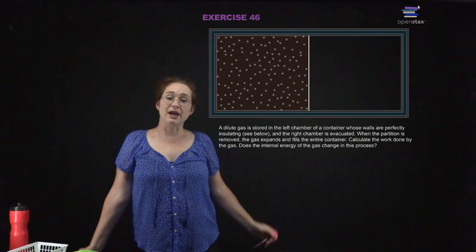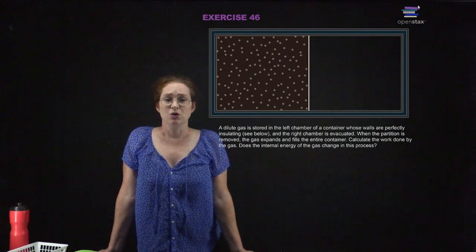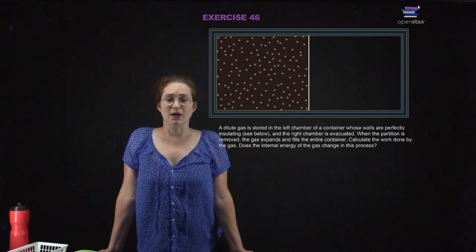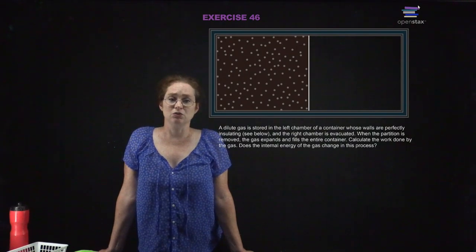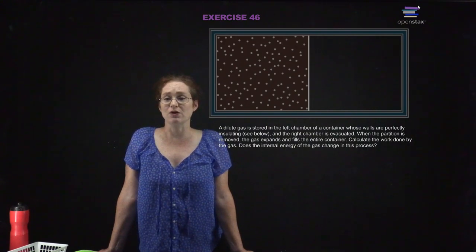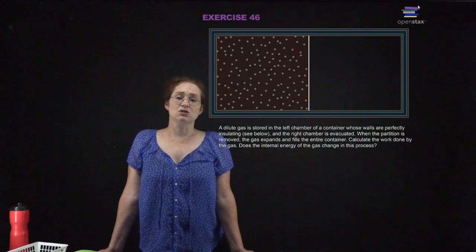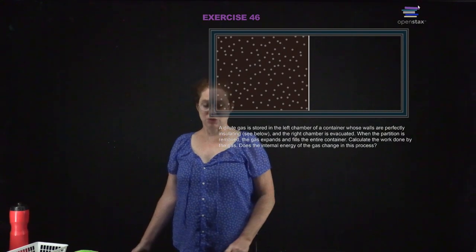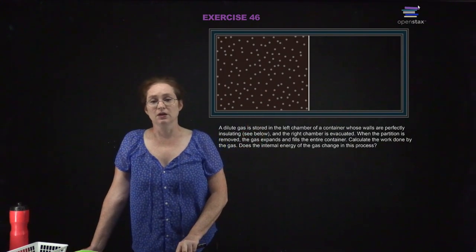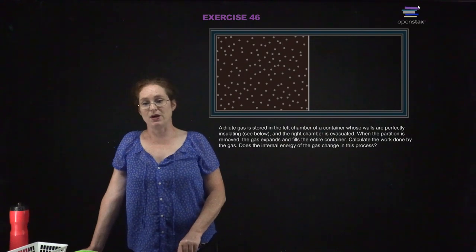A dilute gas is stored in the left chamber of a container whose walls are perfectly insulating, and the right chamber is evacuated. When the partition is removed, the gas expands and fills the entire container. Calculate the work done by the gas. In this case, you have no heat exchanged with the environment, and the gas expands by roughly a factor of two, so the internal energy will change. You would need the exact numbers to solve this fully.